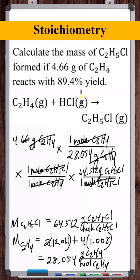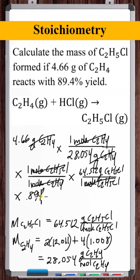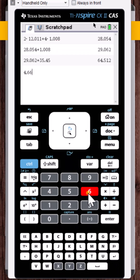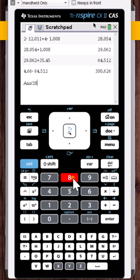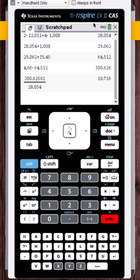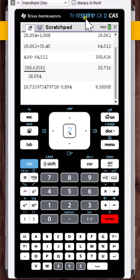What's actually yielded is 89.4% of the stoichiometric amount. So we multiply by 0.894, and that gives us the answer: 9.58 grams of ethyl chloride.